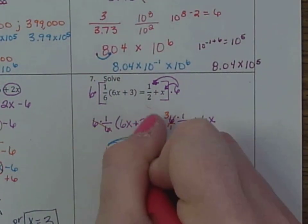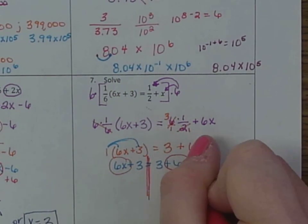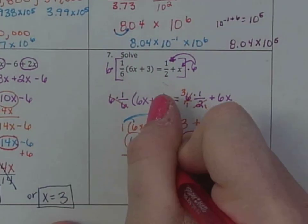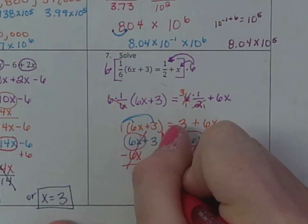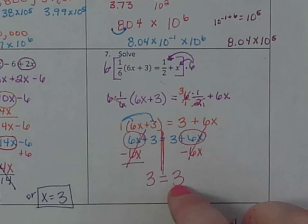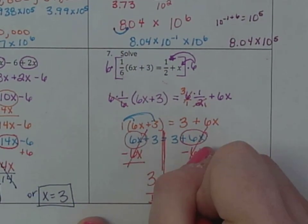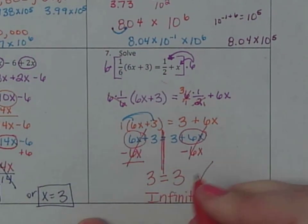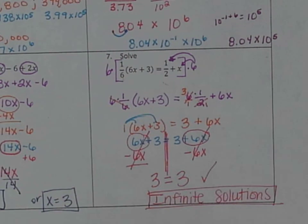Circle the variables. Notice they're on opposite sides. So subtract 6x, subtract 6x. 6x minus 6x cancels. 6x minus 6x also cancels. So we're left with 3 equals 3. Does 3 equal 3? Yes. So that is infinite solutions. If it was 3 equals 12, then it would be no solution.